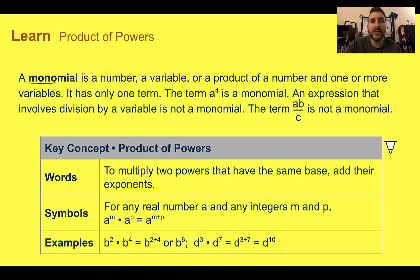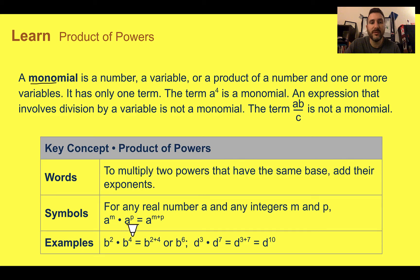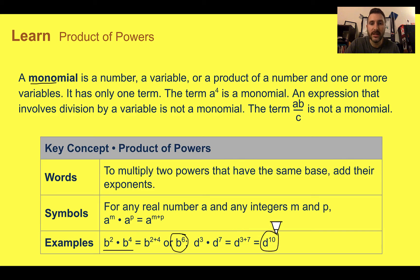Our first key concept is the product of powers. To multiply two powers that have the same base, you are going to add their exponents. So a to the m times a to the p — they both have the same base of a — and we would add their exponents: m plus p gives us our new exponent. For example, b to the second times b to the fourth would be b to the two plus four, which is b to the sixth. D to the third times d to the seventh would be d to the tenth, because three plus seven equals ten.